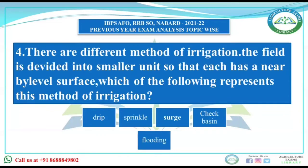Now there are different methods of irrigation. The field is divided into smaller units so that each has a nearby level surface — which of the following represents this method of irrigation? In drip irrigation, also called trickle irrigation, water is mainly dropped into the root zone drop by drop. This method was first introduced in Israel. It is very water-efficient, with water saving of 50 to 70% and water use efficiency of nearly 95%.